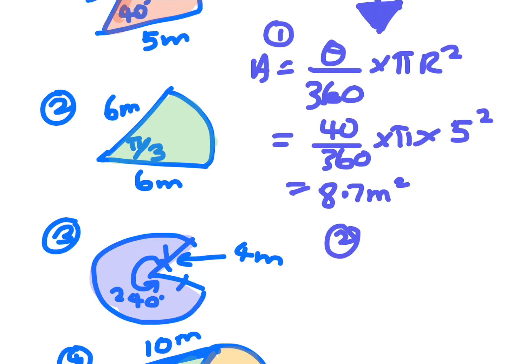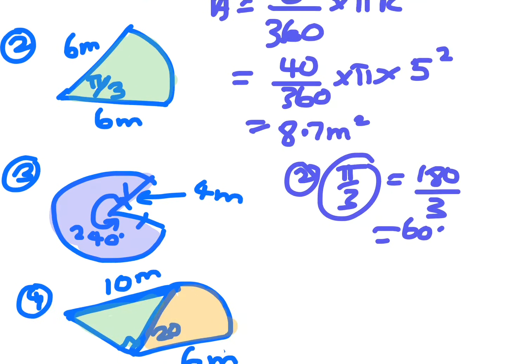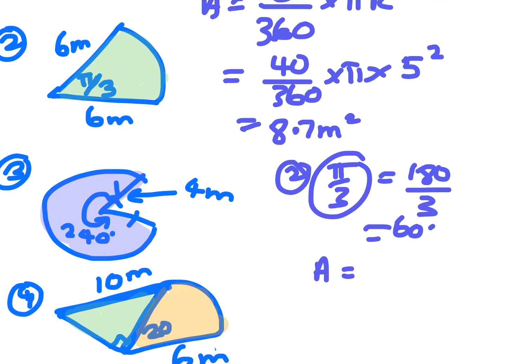If we look at number two, the angle is pi over three, so pi is just 180 degrees, so that would mean that that angle is actually 60. So you can use the same formula to find the area: theta on 360 times pi times six square. The angle will be 60.